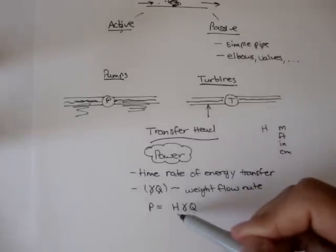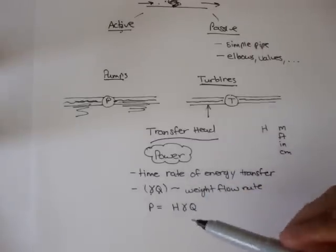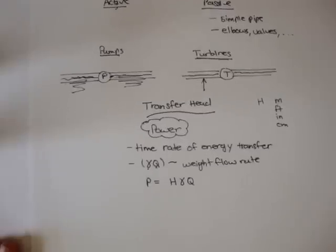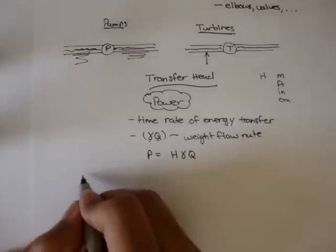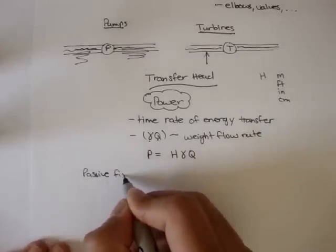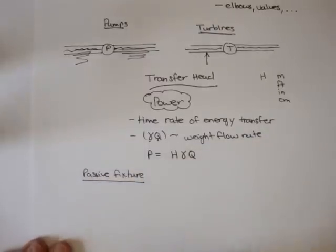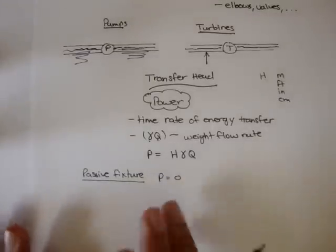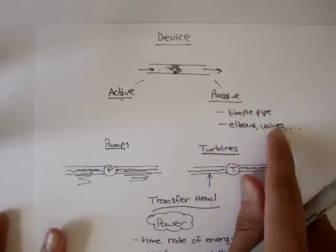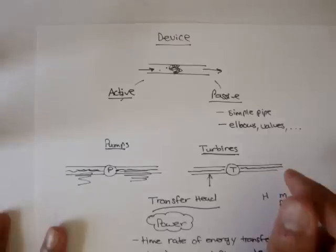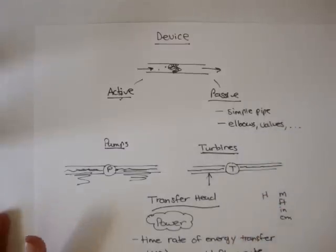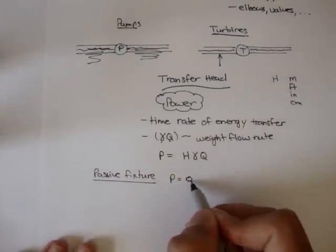The energy head, pump head, and transfer head — turbine head — it'll all make sense in the next couple of examples we do. Let's just continue with the terminology. In a passive fixture, the power is usually zero, and that makes sense — a simple pipe, elbow, or valve isn't giving or taking away energy from the system. An elbow doesn't have any moving parts; they're all just passive, with no moving parts, and the power of those is always zero.